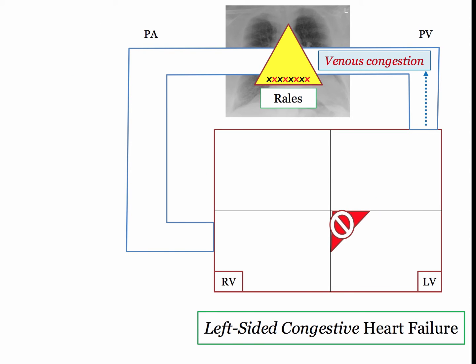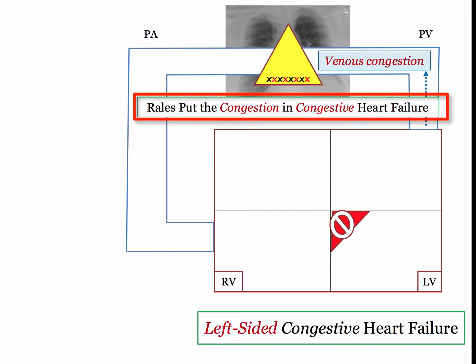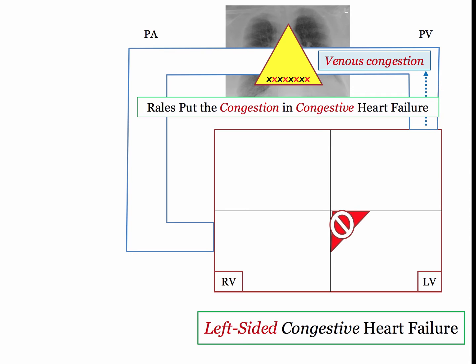In congestive heart failure, if blood is not being ejected out of the ventricle, it will back up — we refer to this as venous congestion. By way of the pulmonary vein, the first stop is the lungs, and this pulmonary venous congestion will be manifested clinically by rales. Rales literally put the congestion in congestive heart failure. Rales are only seen in left-sided heart failure; the patient with isolated right-sided heart failure will not have pulmonary crackles.